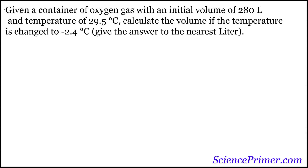This video shows solutions to some example problems from the Charles Law calculation problem set from scienceprimer.com. The first question we're going to answer is the following: given a container of oxygen gas with an initial volume of 280 liters and a temperature of 29.5 degrees Celsius, calculate the volume if the temperature is changed to negative 2.4 degrees Celsius. We're asked to give the answer to the nearest liter.